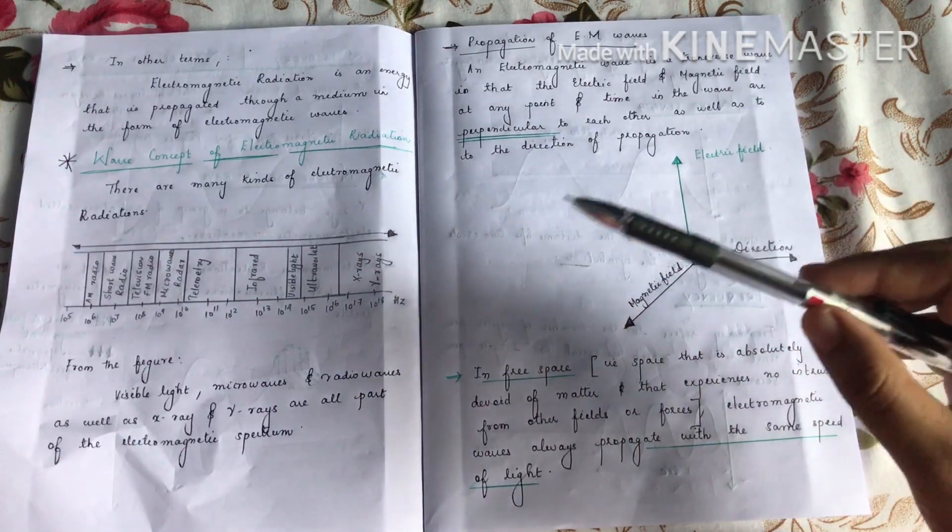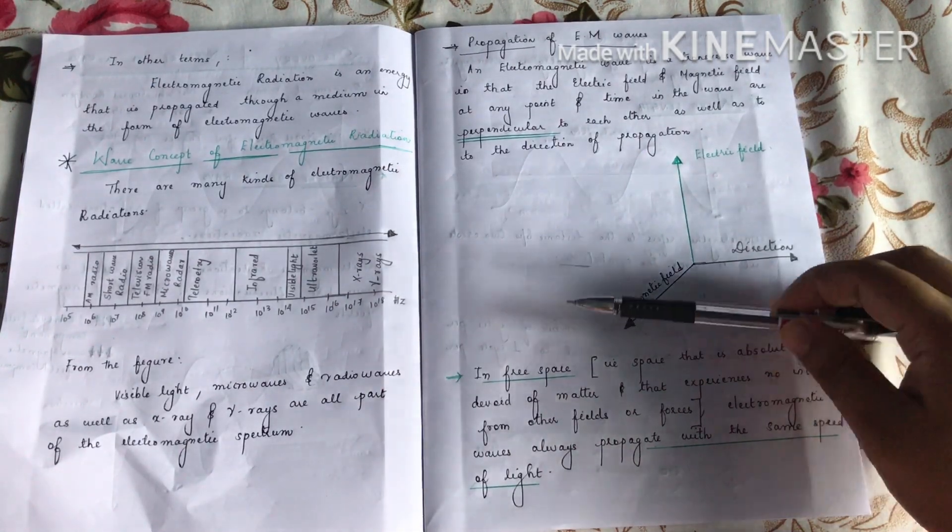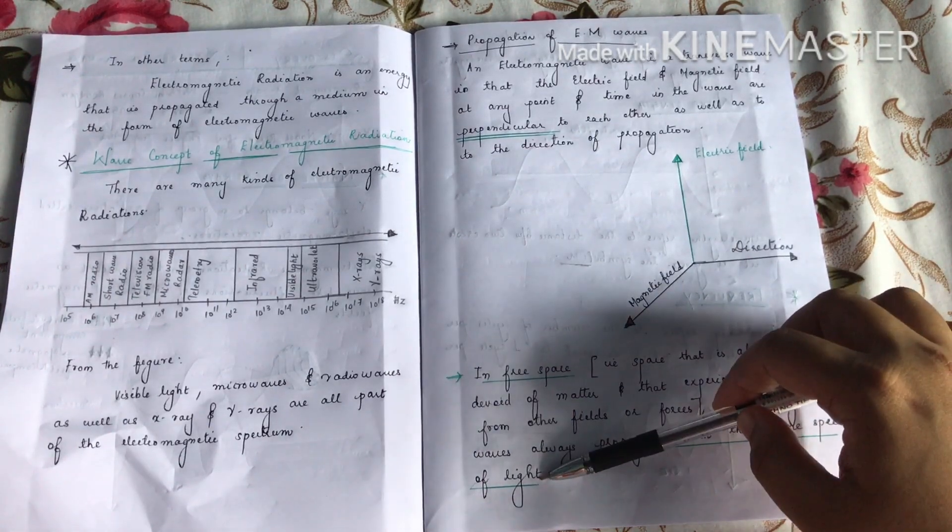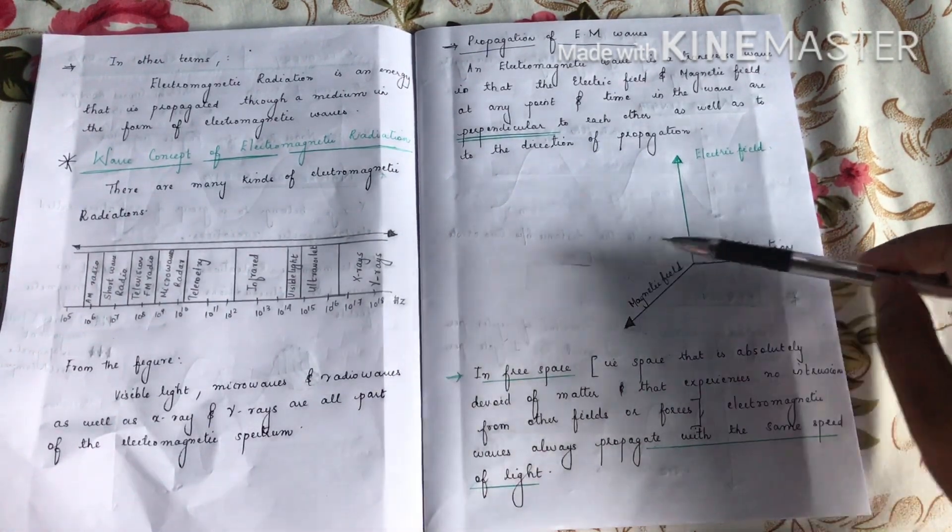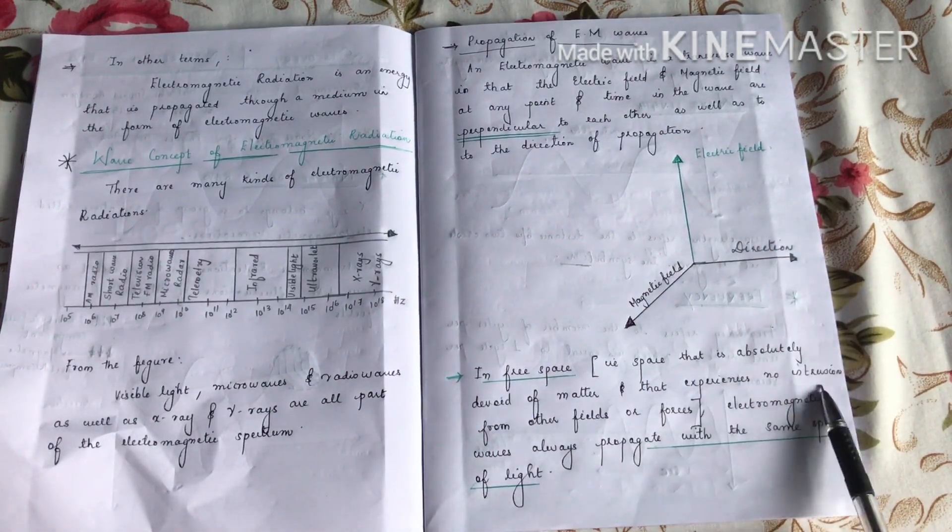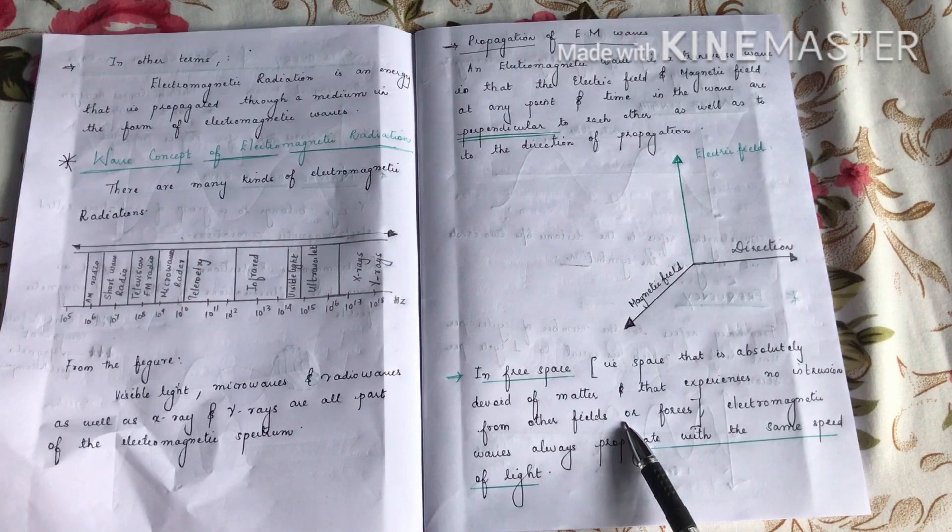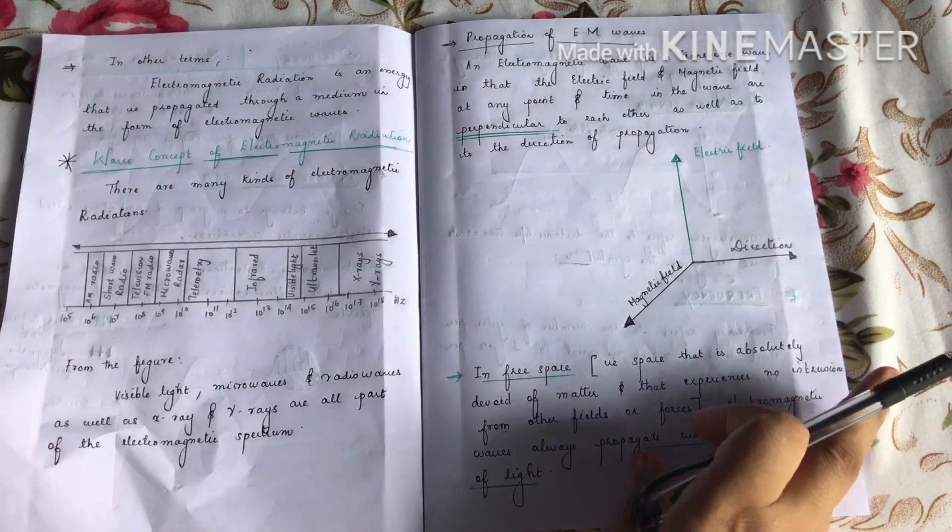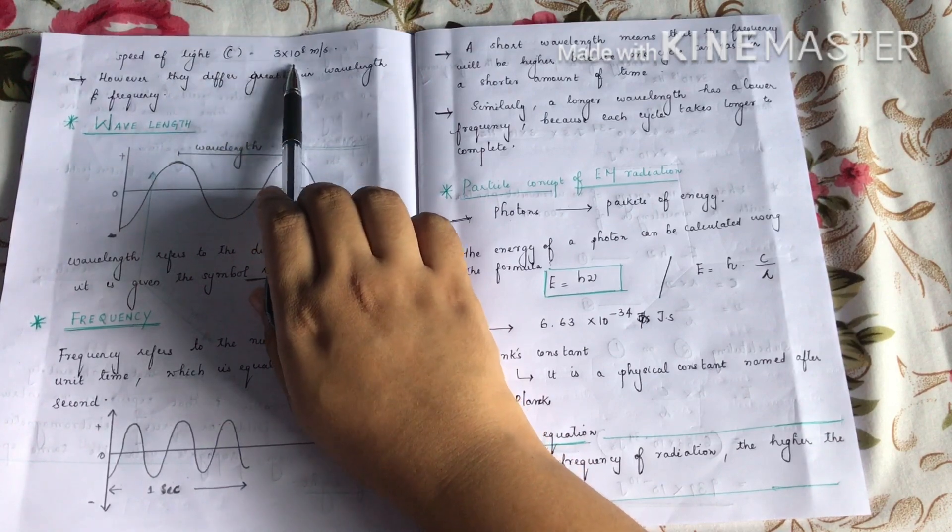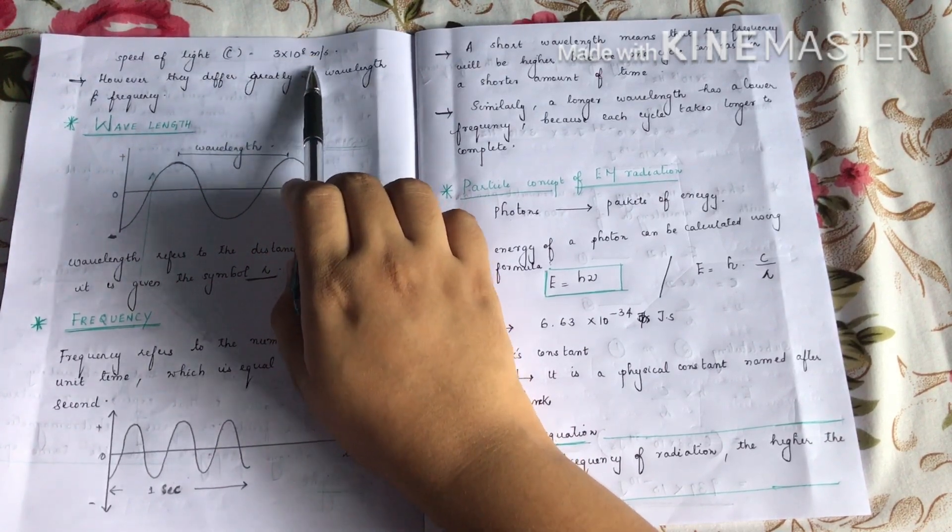And in case of free space, they always propagate with the same speed of light. Free space is a region that is absolutely devoid of matter and that experiences no intrusion from other fields or forces. The speed of light is 3 times 10 raised to 8 meters per second.